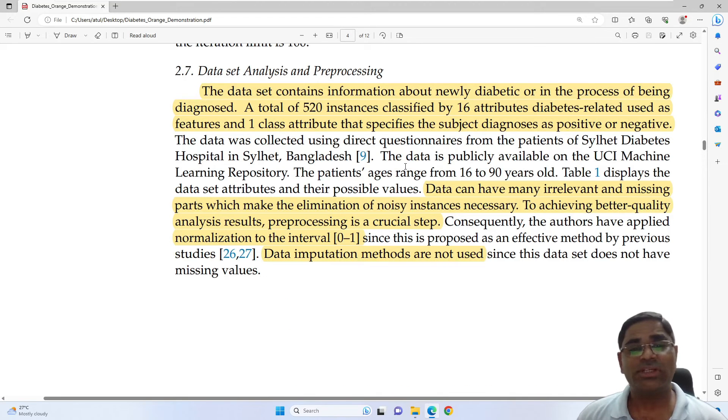So to talk about certain properties of this dataset that we just downloaded. This dataset contains information about newly diabetic or in the process of being diagnosed. There are total 520 instances classified by 16 attributes which are diabetes related and used as features, and one class attribute that specifies if the subject is diagnosed as positive or negative.